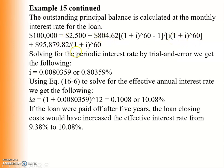From this equation we can calculate the effective interest rate, which is 0.80359% per month. Converting to annual: the effective annual interest rate is 10.08%. This means that if the loan is paid off after five years, the closing costs would have increased the effective interest rate from 9.38% to 10.08%.